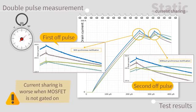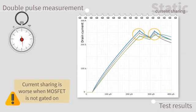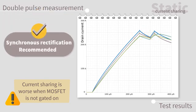The current sharing is worse when the MOSFET is not gated on. So, it is recommended that synchronous rectification be used.